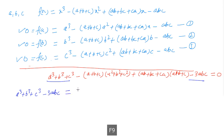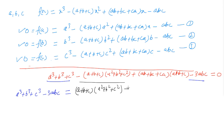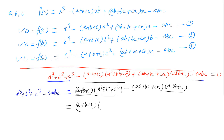After cleaning up: a³+b³+c³ - 3abc = (a+b+c)(a²+b²+c²) minus (ab+bc+ca)(a+b+c). Taking (a+b+c) as a common factor from both terms, we get (a+b+c)(a²+b²+c² - ab - bc - ca). So this is our proof for the first identity.